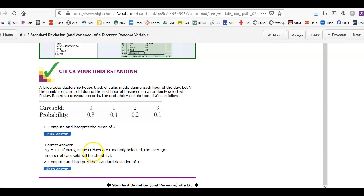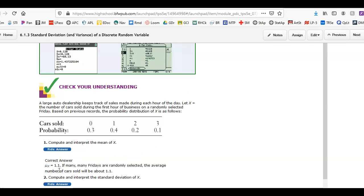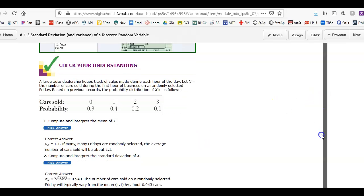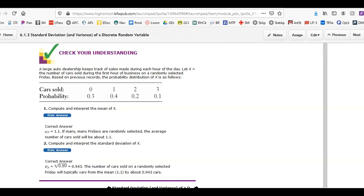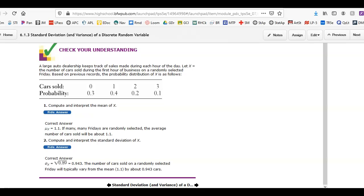Interpretation. If many, many Fridays are selected at random, this is the average number of cars sold. And then for the standard deviation, it's going to be each value, in this case, 0 minus 1.1 squared times 0.3 plus 1 minus 1.1 squared times 0.4, and so on and so forth. Sum all that up, and then take the square root. And that's where they're getting that 0.943 from, which represents the standard deviation.